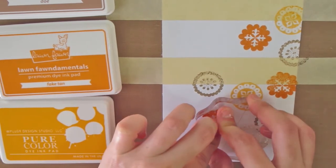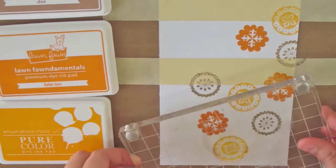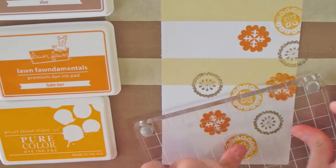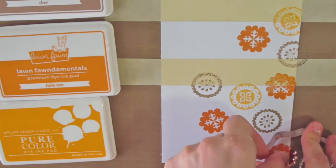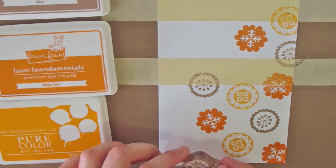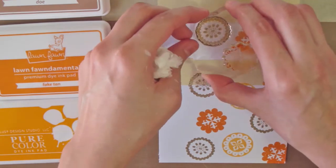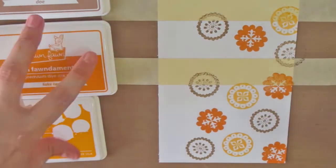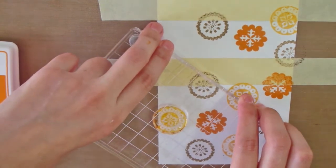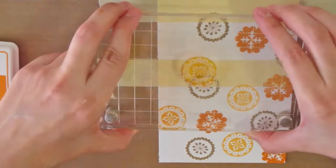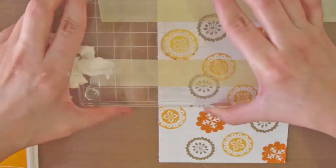Being that said, I totally recommend the dye ink pads from WPlus9. Of course, I still do not recommend anyone to go and buy the whole collection without trying a couple of colors first, because what works for me not necessarily works for someone else. For example, everybody seems to love the Lawn Fawn ink pads, while even when I think they are great, I keep preferring the pure color ink pads from WPlus9 or even my archival ink pads from Ranger.